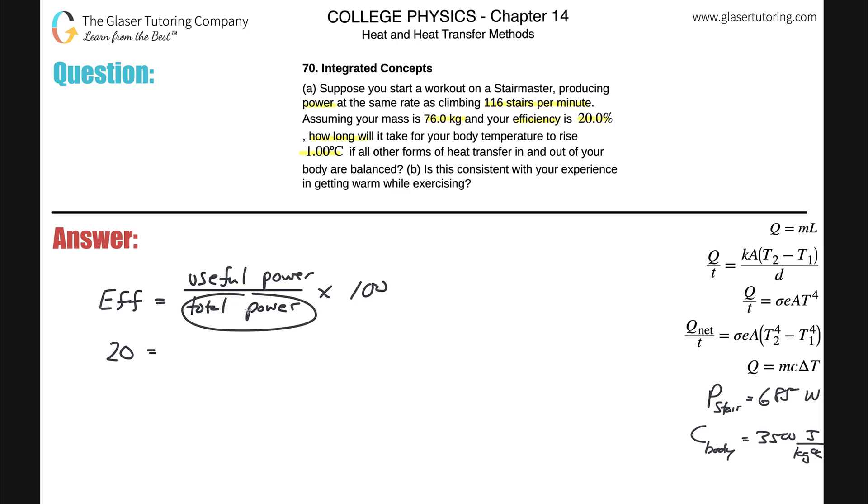So I can calculate the total power that's being outputted by the body. The useful was going to be 685 watts divided by 20, multiplied by 100. All you have to do to solve this algebraically is literally just cross multiply the total power and the 20, and then take out your handy-dandy calculator. That's 685 divided by 20 times 100.